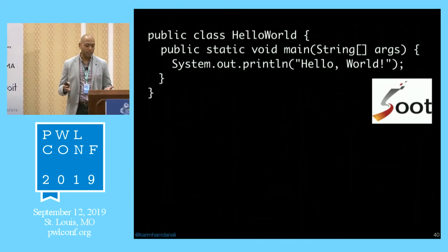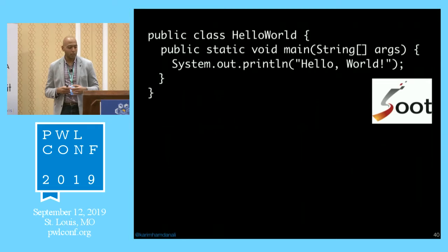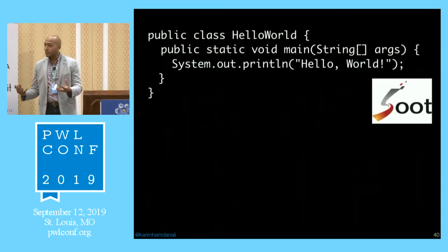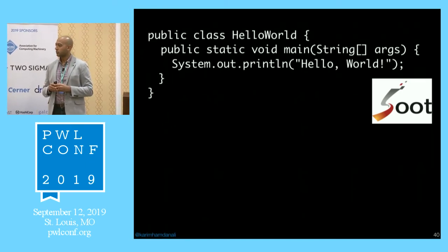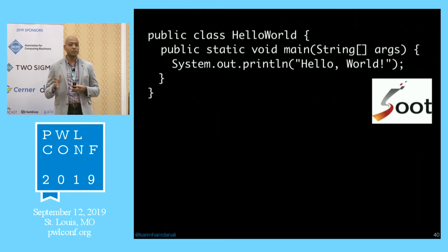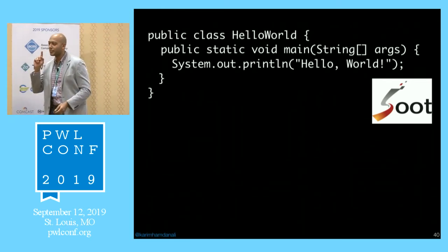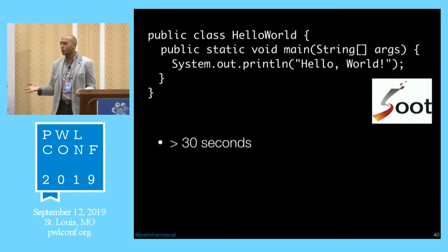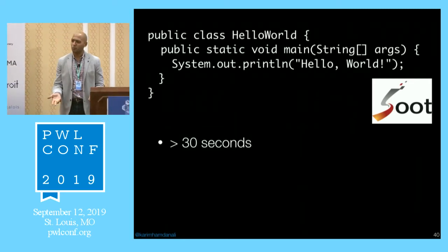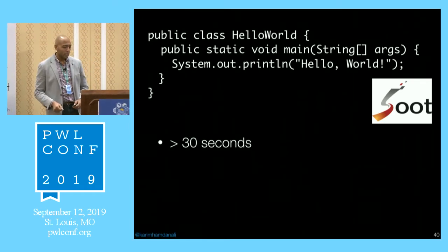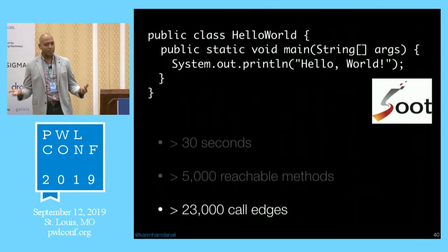I tried Soot, one of the most prominent analysis frameworks in academia, also used in industry, which started at McGill University in Canada by Laurie Hendren's group. I ran the built-in analysis on the Hello World example. It actually took about 30 seconds to get the call graph. So not microseconds, not hours — but why do I need 30 seconds for a call graph from one statement in my code? And I got a call graph with more than 5,000 reachable methods and more than 23,000 edges.